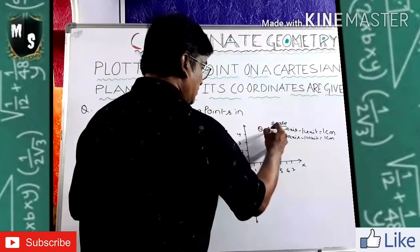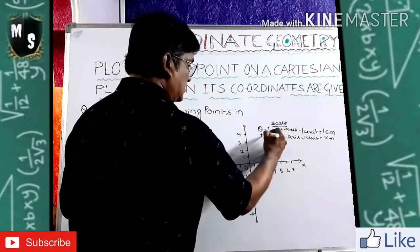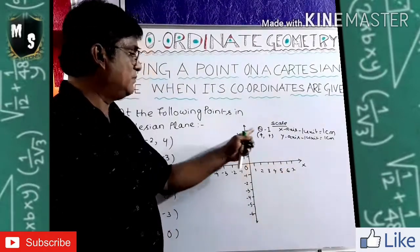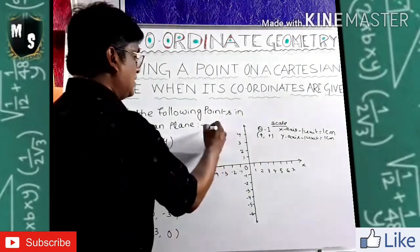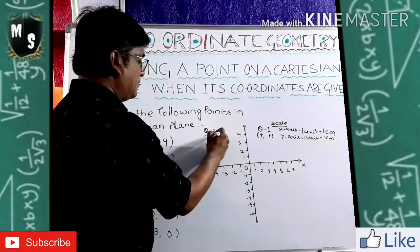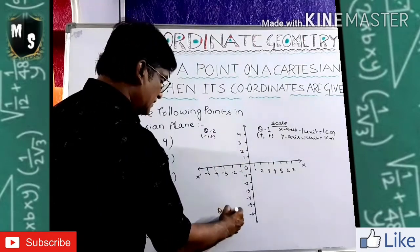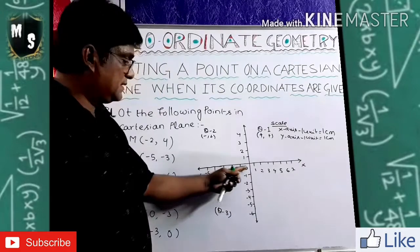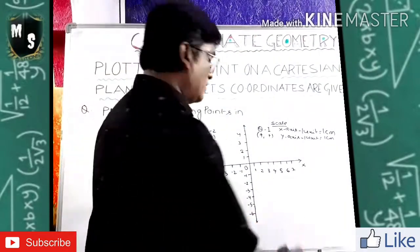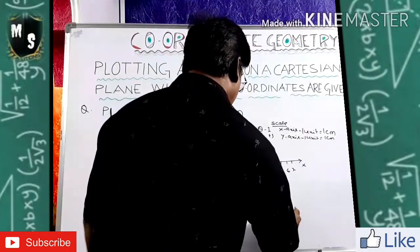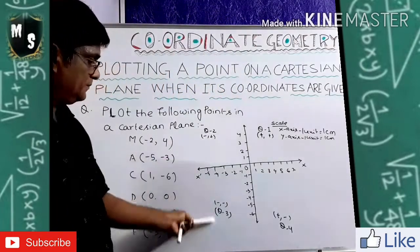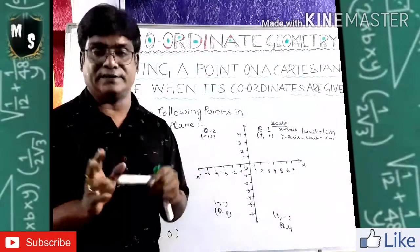Label the quadrants: quadrant one is plus-plus (X positive, Y positive); quadrant two is minus-plus (negative and positive); quadrant three is minus-minus; quadrant four is plus-minus. Everything should be written nicely.